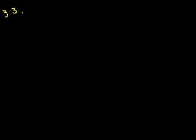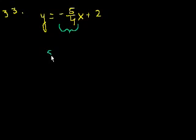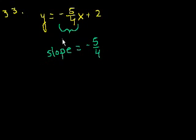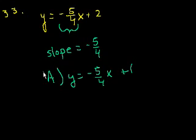We're on problem 33, which asks which equation represents a line that is parallel to y equals negative 5/4 x plus 2. A line that's parallel will have the same slope. We can inspect this and say the slope is the coefficient on the x term, so the slope is negative 5/4. Choice A is y equals negative 5/4 x plus 1 — it has the exact same slope, just shifted down by 1. So A is our choice.